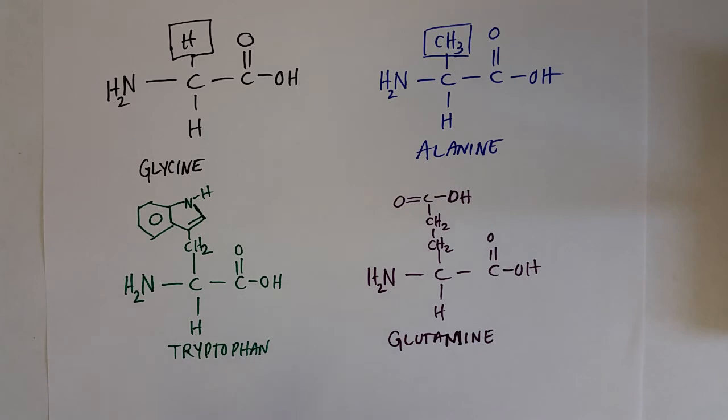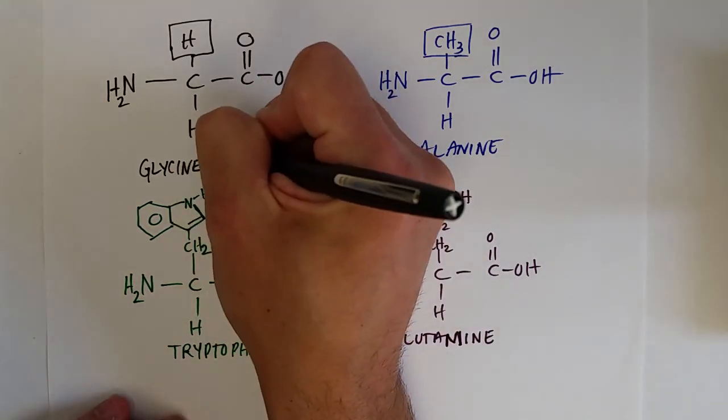So these are four of the 20 amino acids in your body. They all have a name, and they also have abbreviations with them as well. They have a three letter abbreviation. Glycine's three letter abbreviation is GLY.